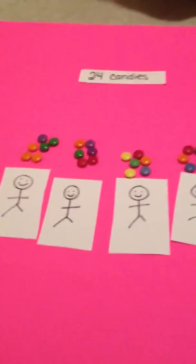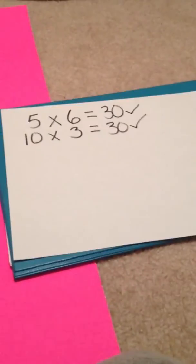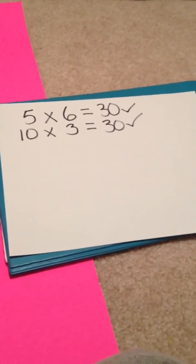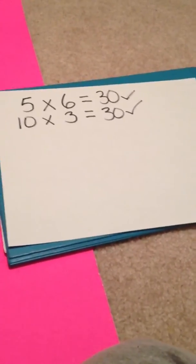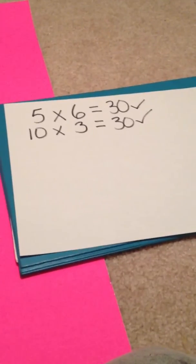This is another one of our strategies that we can use. Sometimes you can look at the two numbers and if one can be halved and one can be doubled and that makes it easier for you, that's a strategy that you can use.